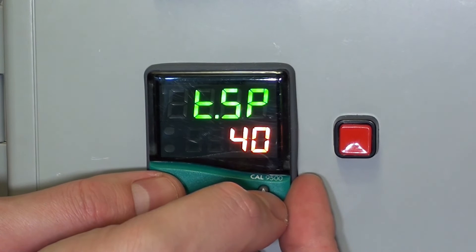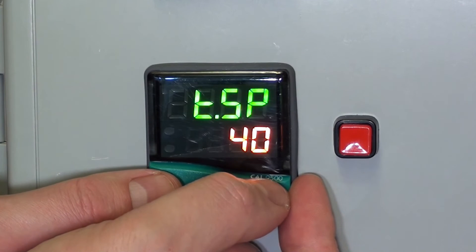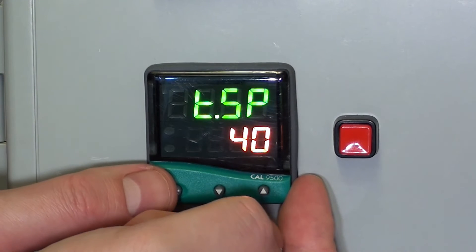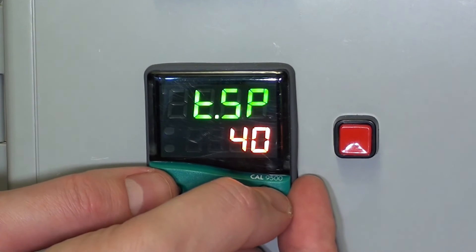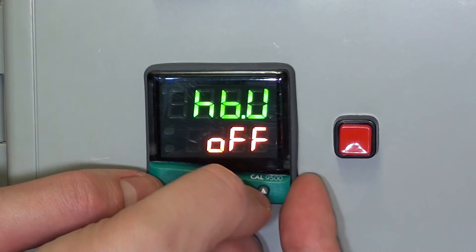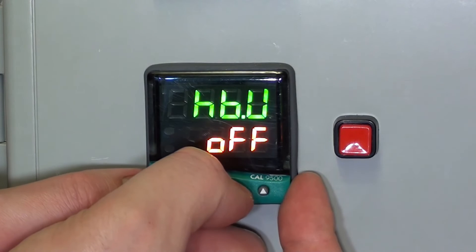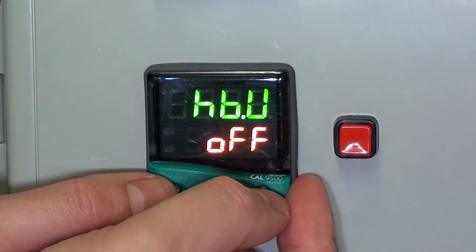The target set point is 40, 40 degrees, so once it ramps up to 40, that's our target, it will go to segment 2. And I'll show you the segment 2 settings in a minute.